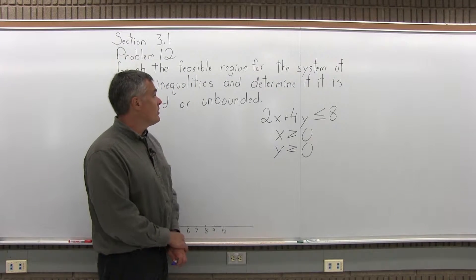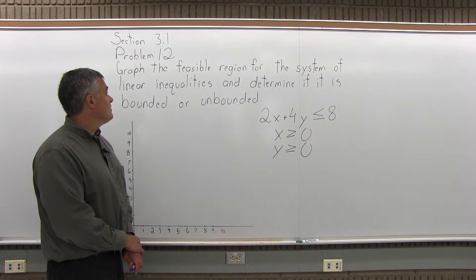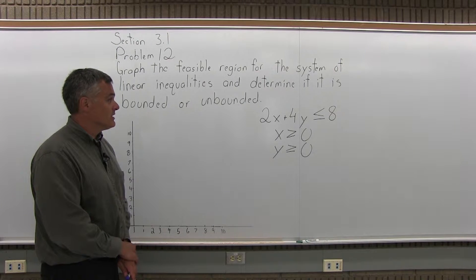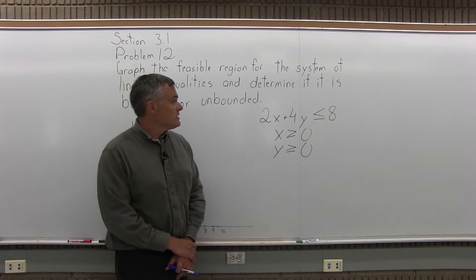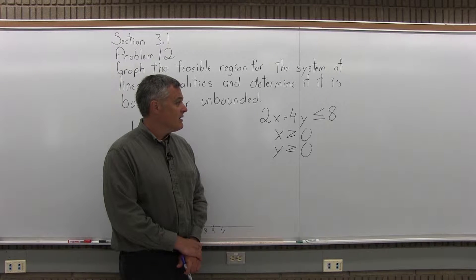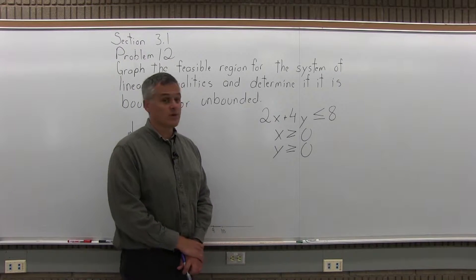This is Section 3.1, Problem 12. It says, graph the feasible region for the system of linear inequalities and determine if it is bounded or unbounded. We have three linear inequalities: 2x plus 4y is less than or equal to 8, x is greater than or equal to 0, and y is greater than or equal to 0.